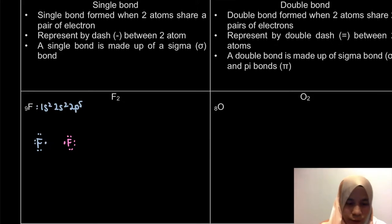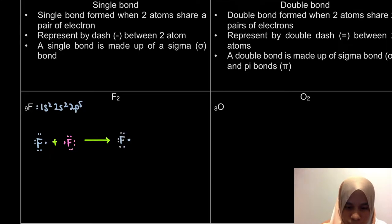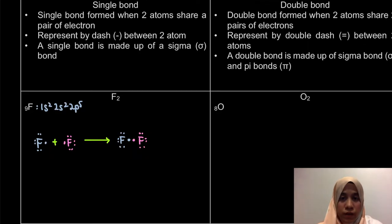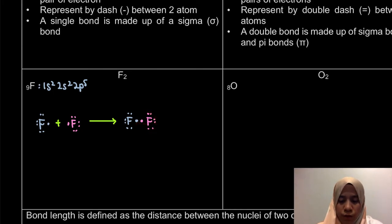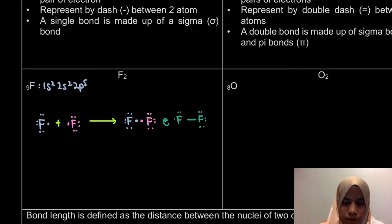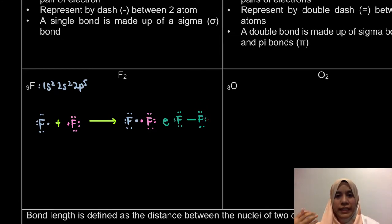So what happens to the product is that the electrons are shared. Once each fluorine atom shares one electron between themselves, this fluorine has already achieved octet — 1, 2, 3, 4, 5, 6, 7, 8 — and the same goes for the second fluorine. You can also draw it as F–F, but make sure to draw the Lewis dot symbol to show that the atom has achieved octet.